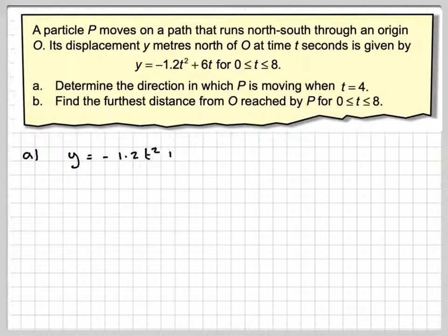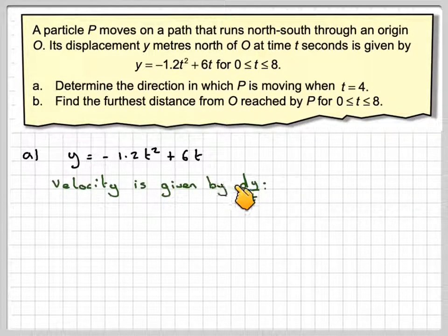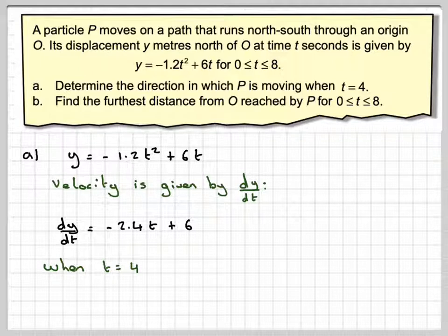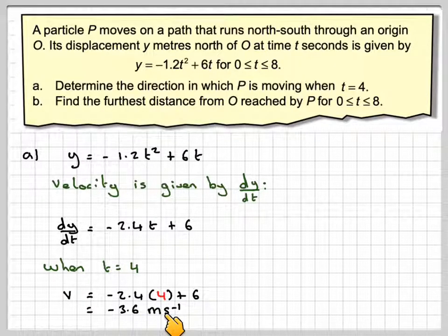If we've got y = -1.2t² + 6t, if we want to find the velocity, because this is a displacement, then we need to differentiate that. So dy/dt, if we differentiate that, is 2 times -1.2, which gives me -2.4t, reduce the power by 1, and then plus just 6. When t = 4, then the velocity will be -2.4 × 4 + 6, which gives me -3.6 m/s.